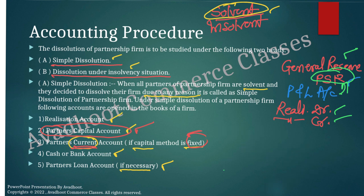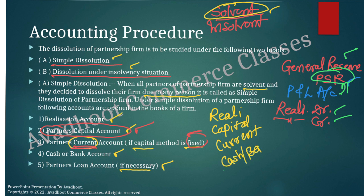Whenever the capital balances are fixed capital method, keep in mind: all the adjustments that we considered in the capital account are to be done to the partner's current account instead. Then transfer the current account balance to the partner's capital account. The partner's capital account will have only two entries — the opening balance entry and the balance from the current account. Then from capital to the cash or bank account, considering any deficiency. That is called simple dissolution, which is generally asked in the examination.